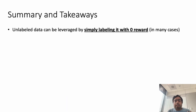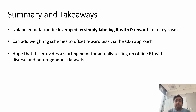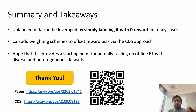To summarize, we show that unlabeled data can be leveraged by simply labeling it with the minimal possible reward of the RL problem, which is quite simple to use in practice. We also show that adding a simple weighting scheme such as CDS to offset the reward bias can be quite effective. We hope this provides a natural starting point for scaling up offline RL methods to more diverse and heterogeneous datasets where we don't have reward annotations. Please check out our paper and our previous CDS paper for more details, and come to our poster. Thank you so much for listening.